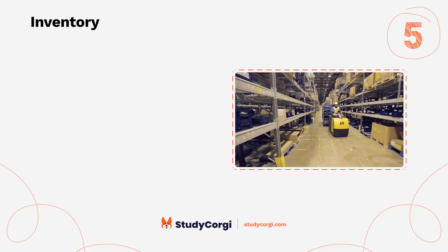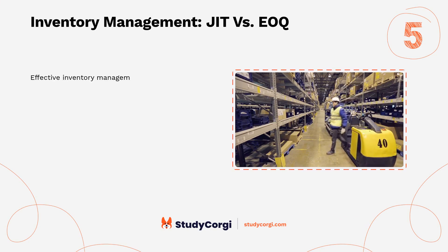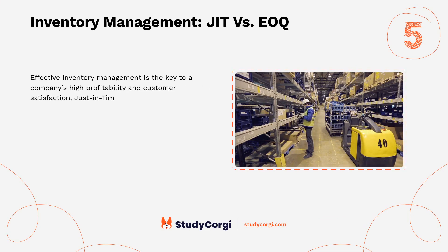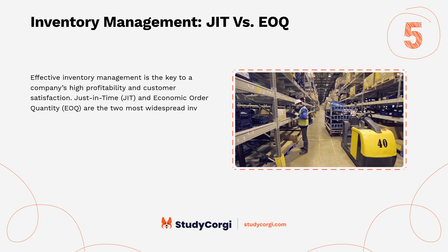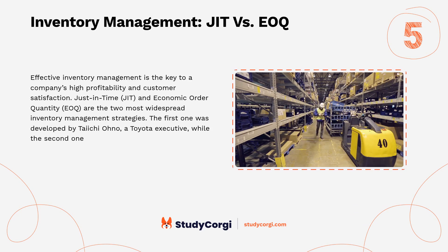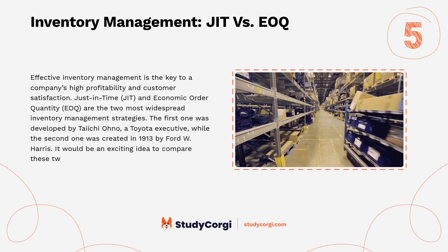Inventory Management: JIT vs. EOQ. Effective inventory management is the key to a company's high profitability and customer satisfaction. Just-in-time (JIT) and Economic Order Quantity (EOQ) are the two most widespread inventory management strategies. The first was developed by Taichi Ono, a Toyota executive, while the second was created in 1913 by Ford W. Harris. It would be an exciting idea to compare these two approaches.